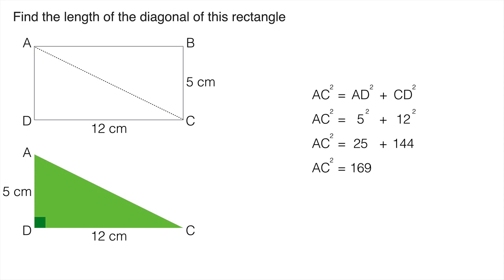So now we need to take the square root. AC is the square root of 169 which is 13. So the length of the diagonal is 13 centimeters.